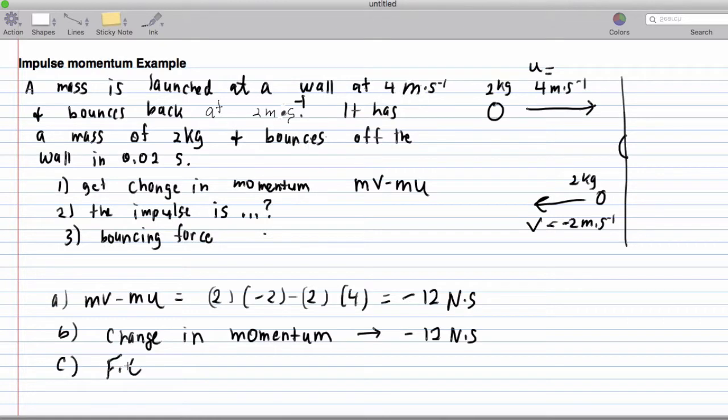And that tells me that the impulse is also negative 12 newton seconds. To get the bouncing force, we know that F times t is mv minus mu, which we already solved for as negative 12. So let's continue with this. We have the force and then the time it's in contact with the wall, this negative 0.02 seconds, that's negative 12. So when we end up isolating the force, we end up getting a force of negative 600 newtons against the ball when it hits the wall.